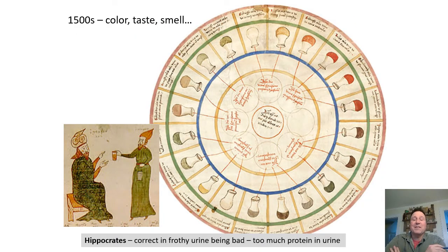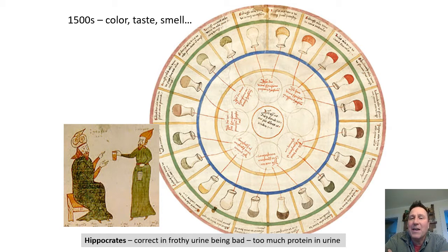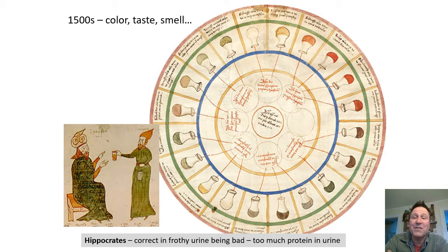Hippocrates knew that you could look at urine and tell about health. He knew that frothy urine with a lot of foam could be an indication of kidney disease — he didn't know what a protein was, but he knew there was a problem. We've been looking at urine a long time as health professionals. A lot of early readings were inaccurate, but definitely today we know urine is a good tool to talk about our health.